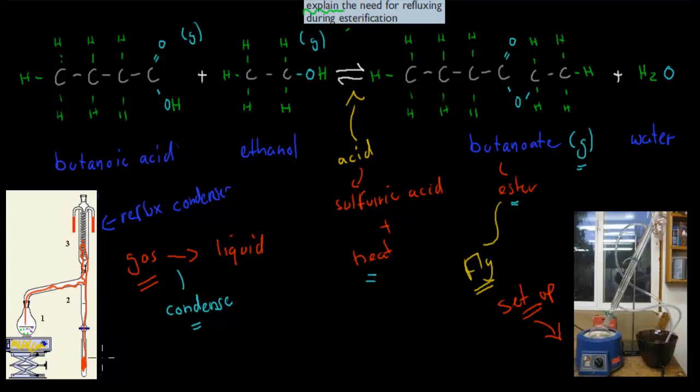So again, this explains the need for refluxing during esterification. The butanoate—our ester—is highly vaporous. We've used lots of heat, making it vapor. That's the problem, because it will fly away. We use our condenser to condense it so we can collect it. We can't easily collect it in gas form, but we can in liquid form. That's why we use refluxing—so we can collect our actual ester.